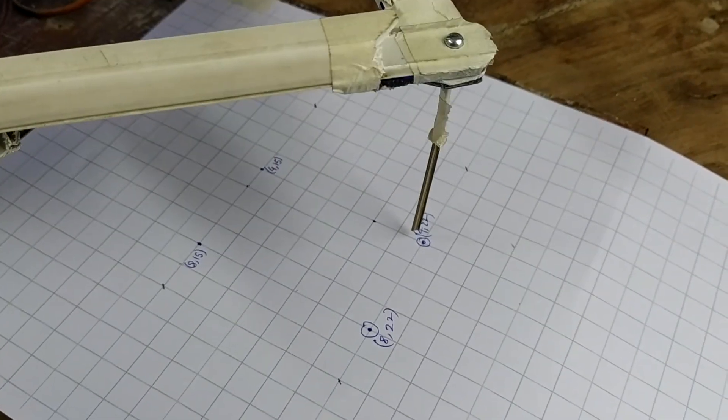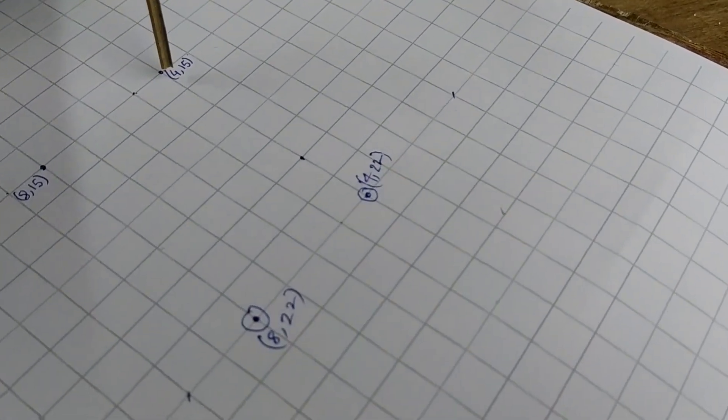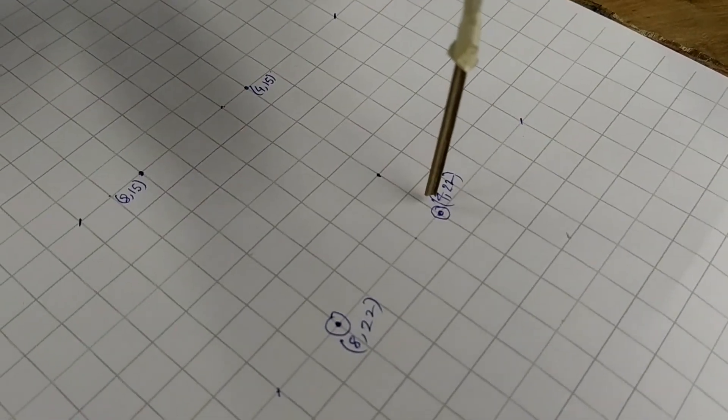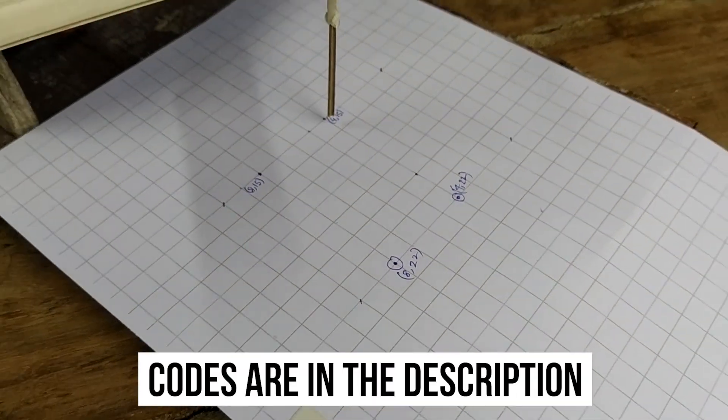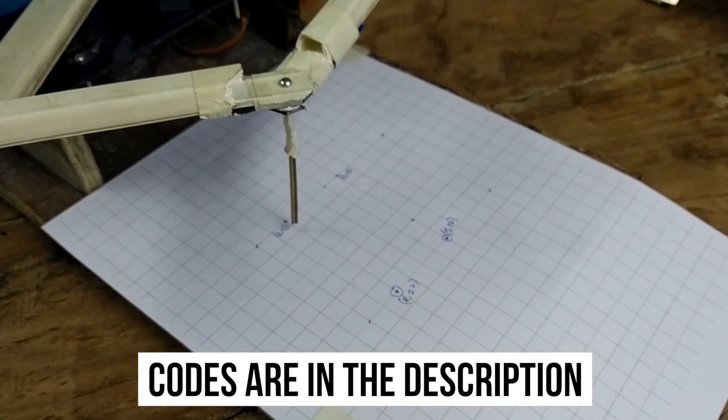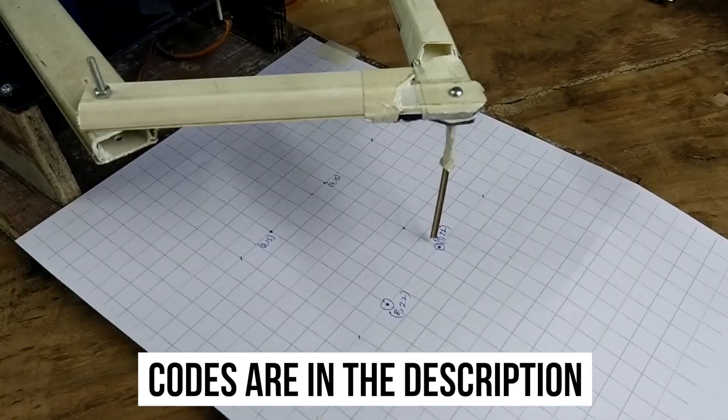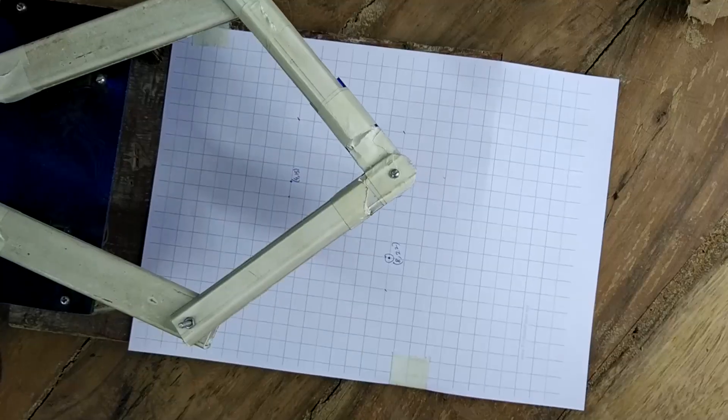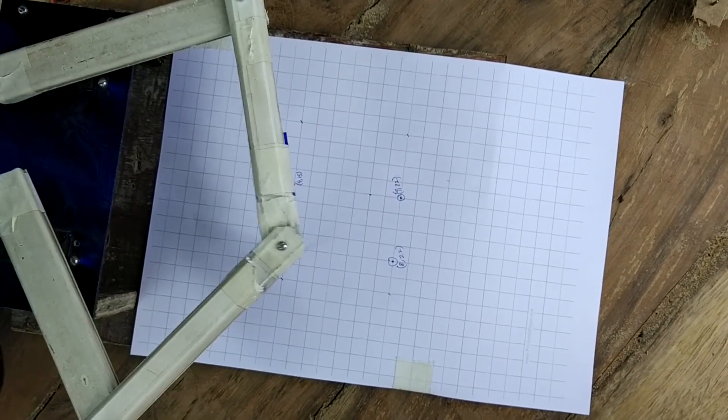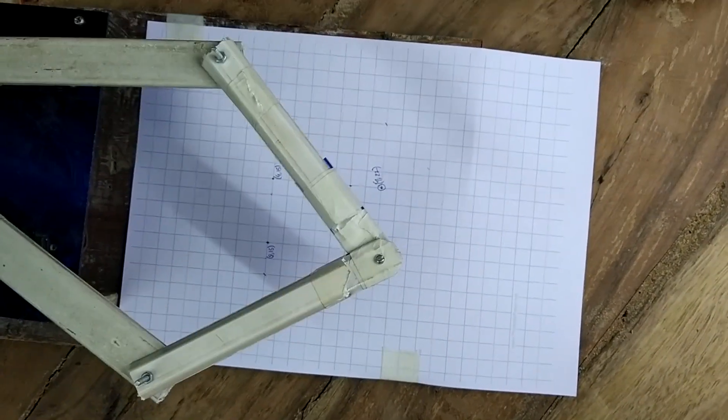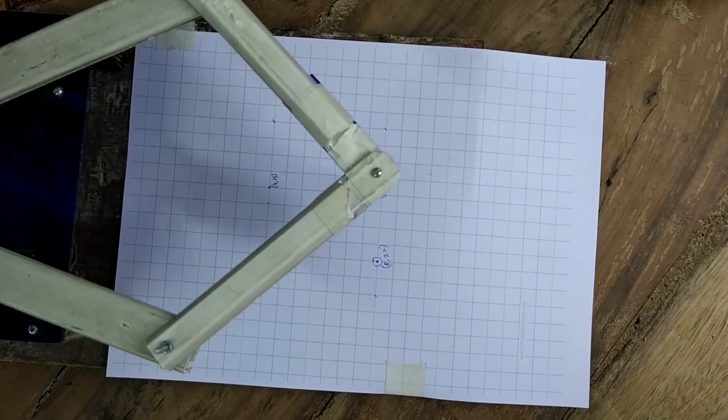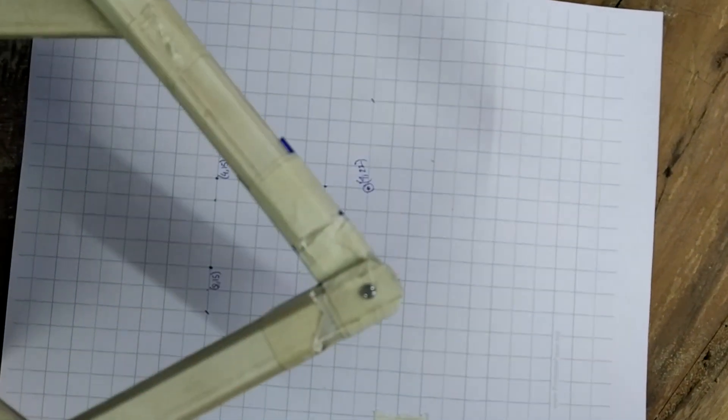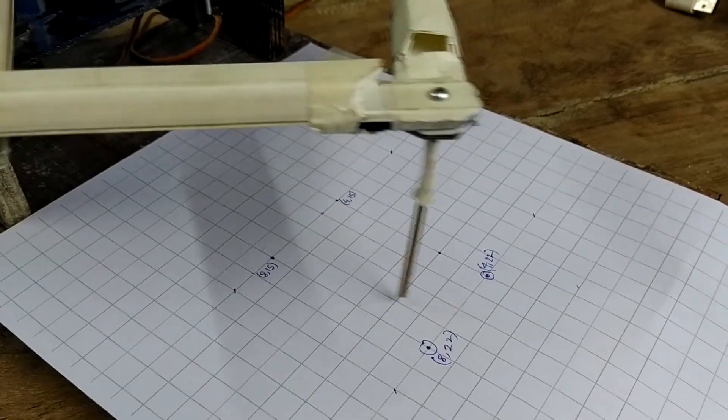For moving the end effector of the SCARA robot, we have given four coordinates which are 4,15 / 4,22 / 8,22 and 8,15. These four coordinates are given to draw a rectangle, but there is a little bit of error. The end effector is not going to the exact coordinate because here we are using Arduino, and as this is an 8 bit microcontroller, it cannot calculate the angle for the servos very accurately. And the servo motors are not also very accurate. Including all this error, we can see an error of 3 to 4 millimeter.